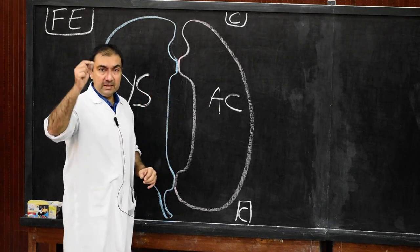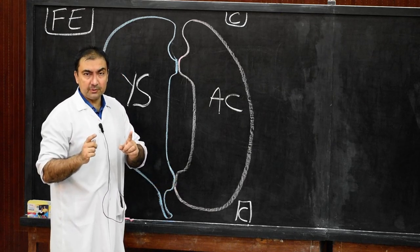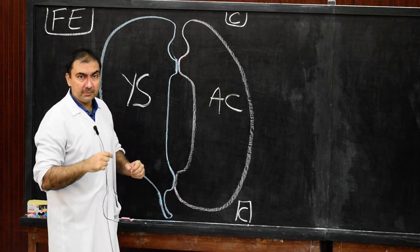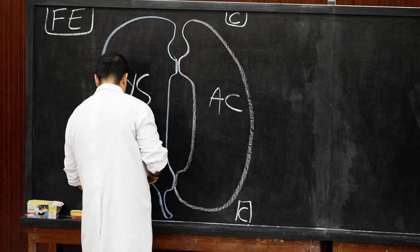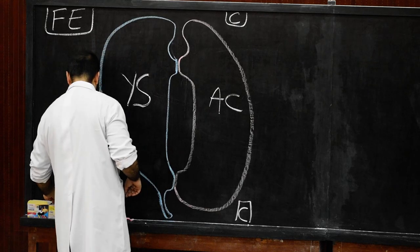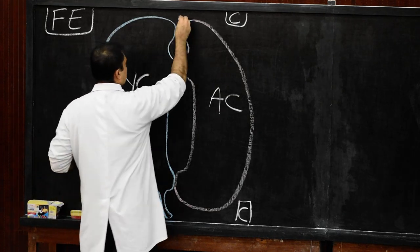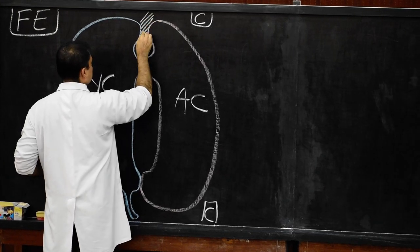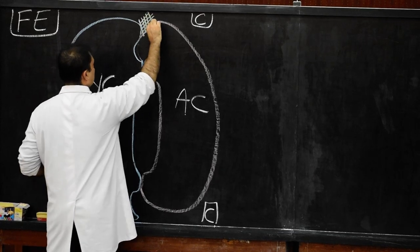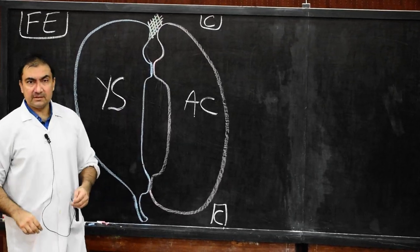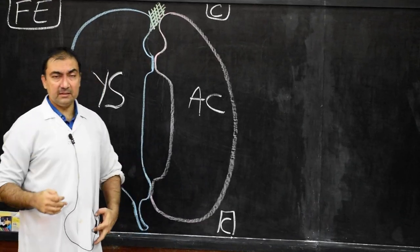Now we draw the actual structures in the central midline axis of the embryo before the folding. The first structure we draw will be septum transversum — always remember septum transversum will be the first structure in the central axis midline in the cephalic direction.